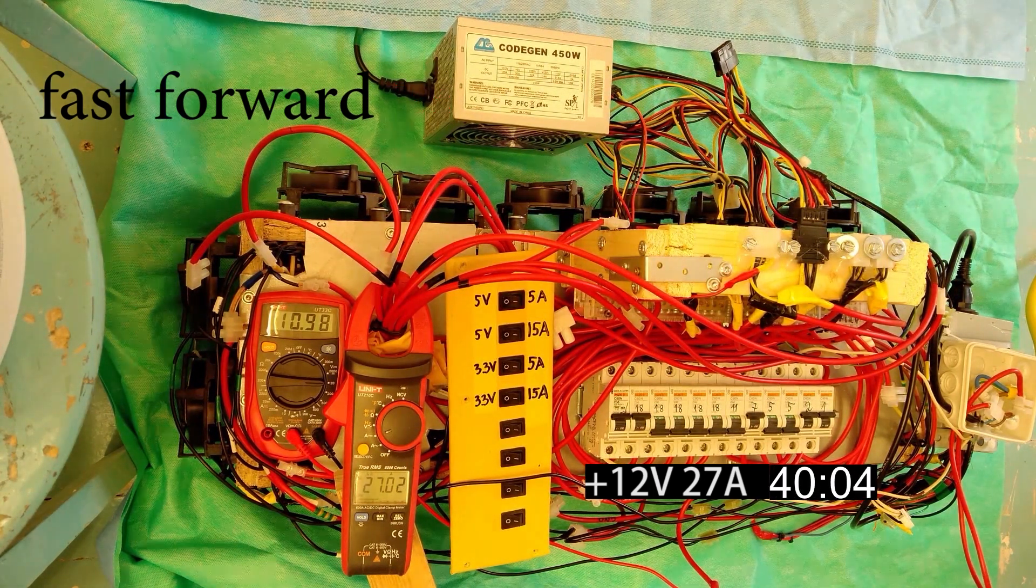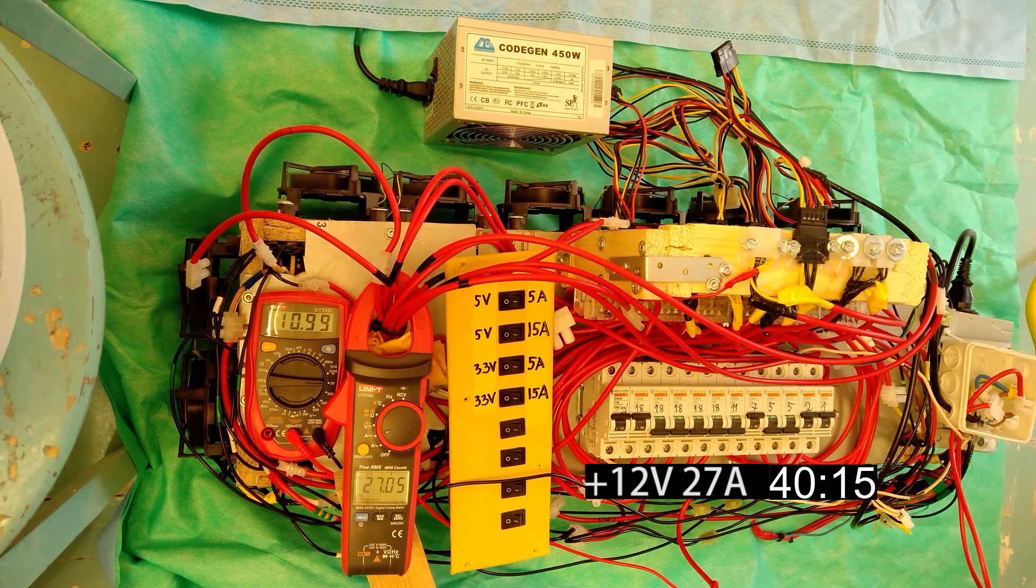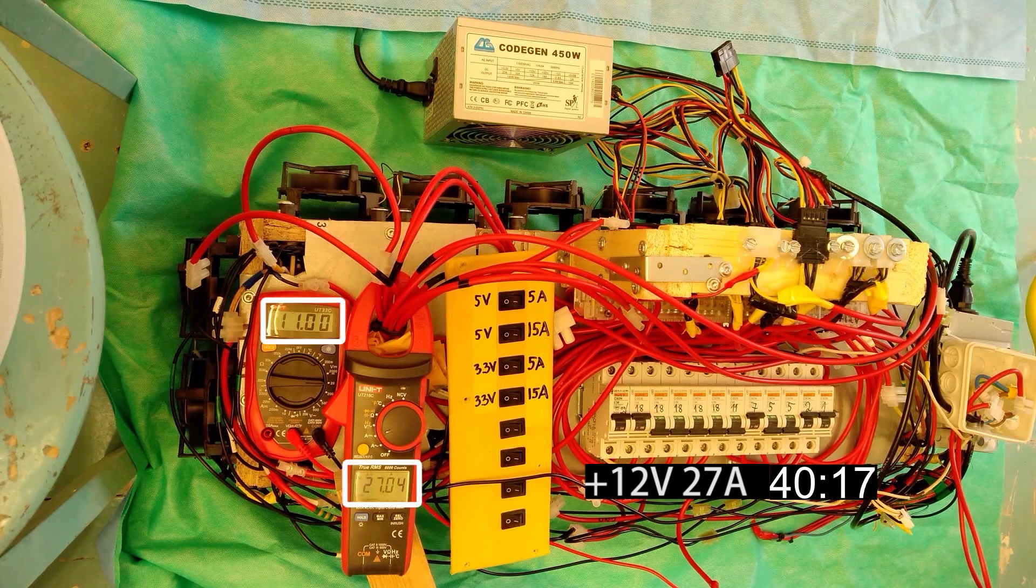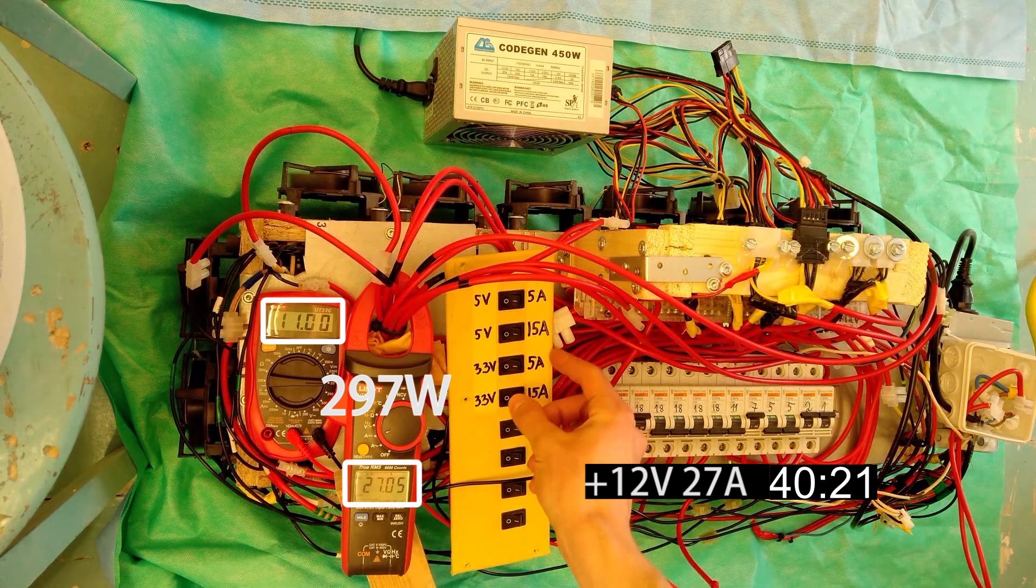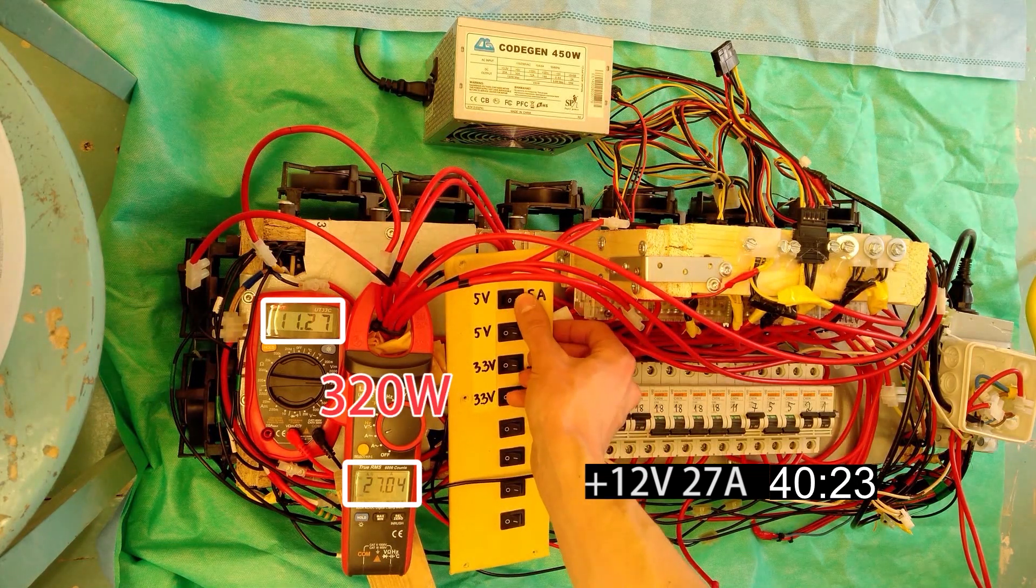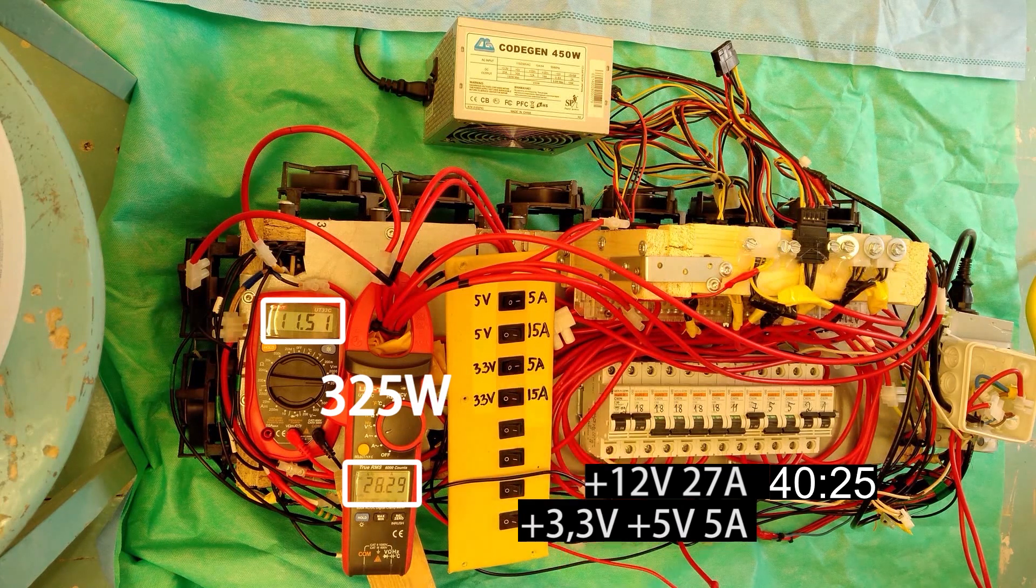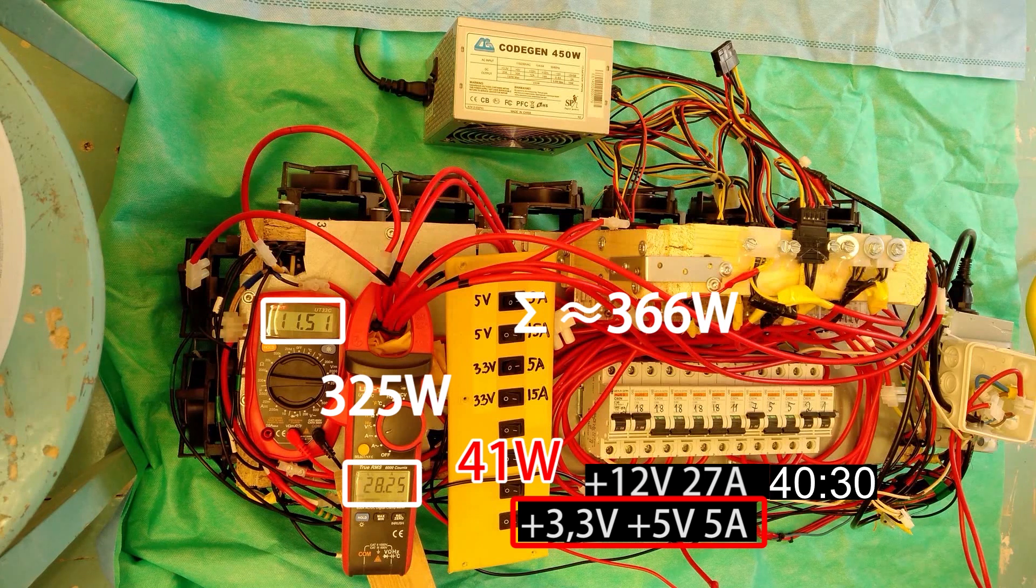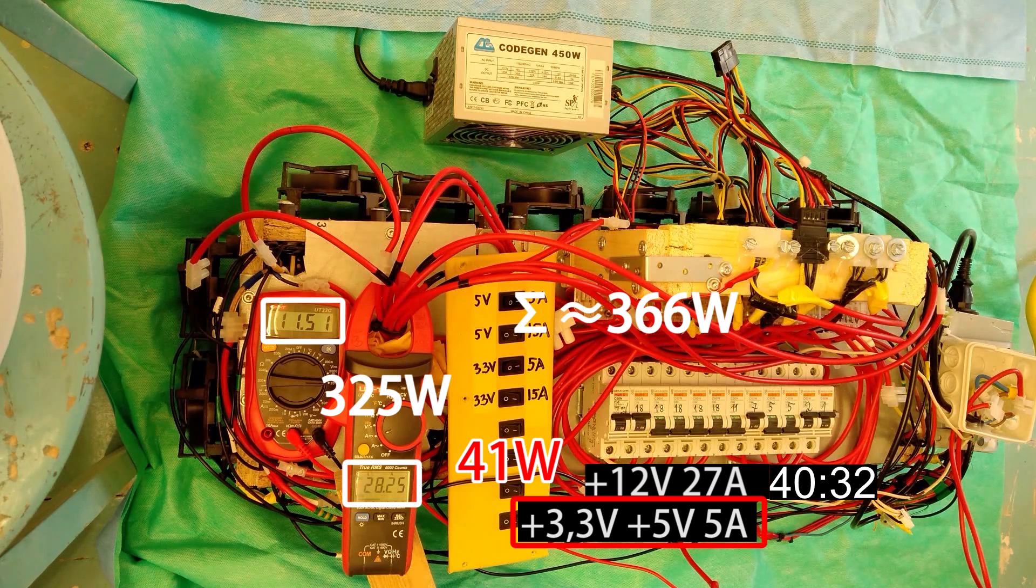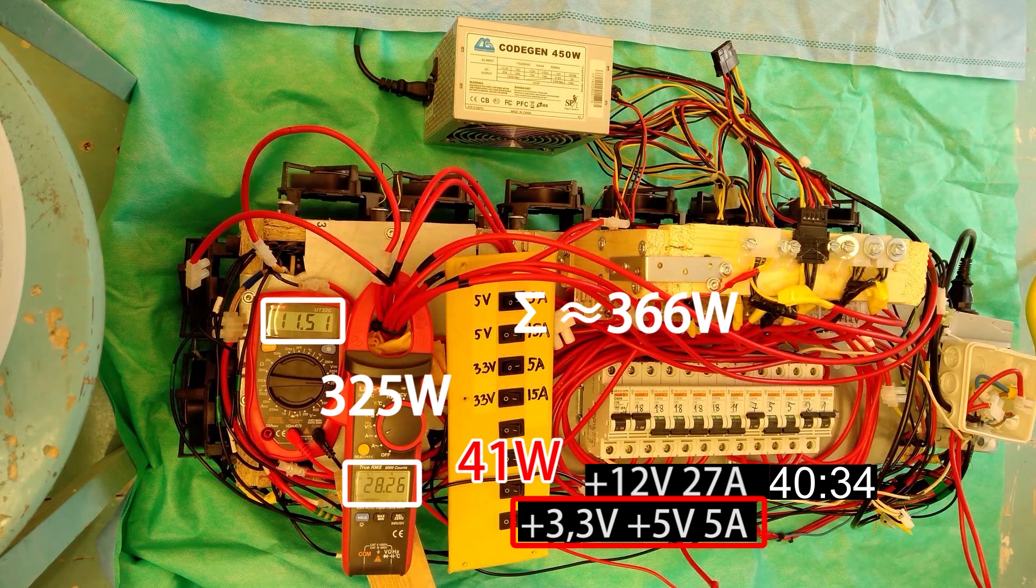After about 40 minutes of stability with the power supply providing 297 watts on the 12 volt rail, I'm introducing a small load of 5 amps on the 3.3 and 5 volt rails each. This causes the 12 volt rail voltage to shoot up resulting in an increased power output of 325 watts.